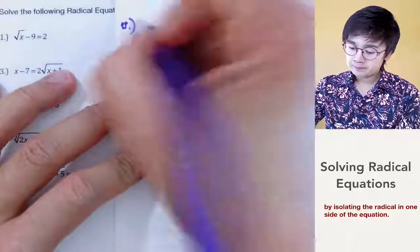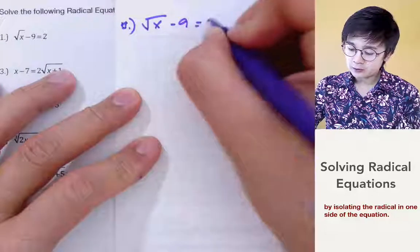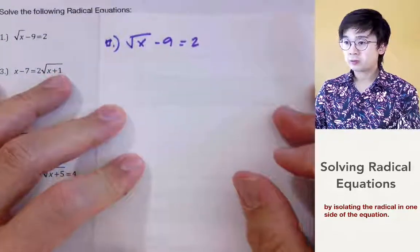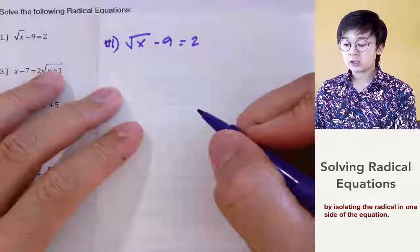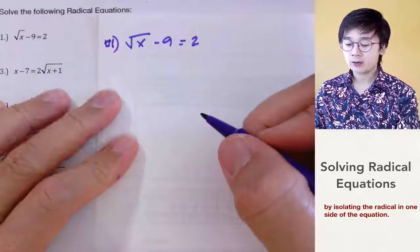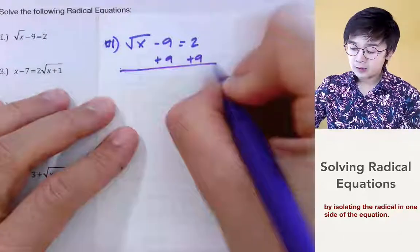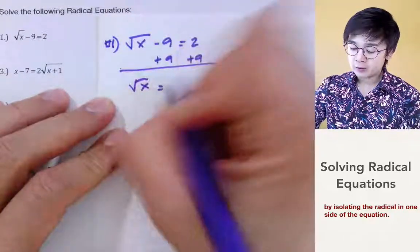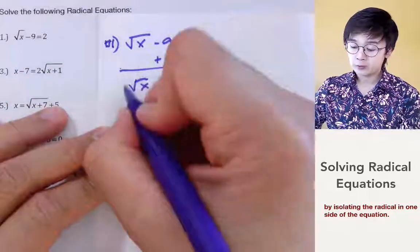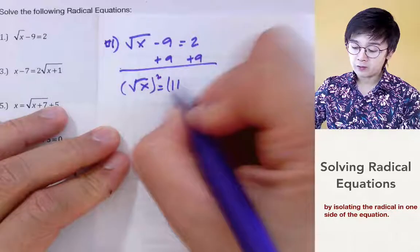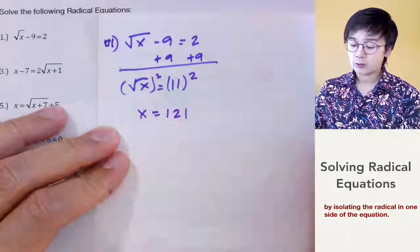We have square root of x minus 9 equal to 2. The basic rule in solving a radical equation is to always isolate your radical expression. In this case we are adding 9 on both sides, leaving us with square root of x equal to 11. And to get rid of the square root, we're going to take the square of both sides and we'll end up with x equal to 121.